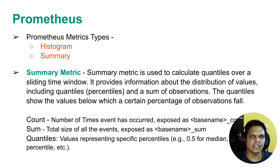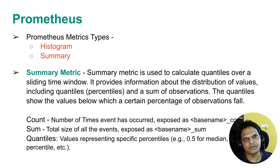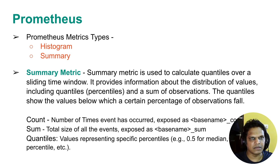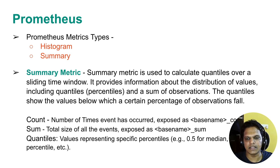Count is the number of times that an event has occurred, and it is exposed as a base metric name underscore count. Sum is the total size of the events — count shows the number of times the event occurred, while sum shows the total size. The quantile is a value representing a specific percentile, like the 50th percentile, 90th percentile, 99th percentile, and so on.